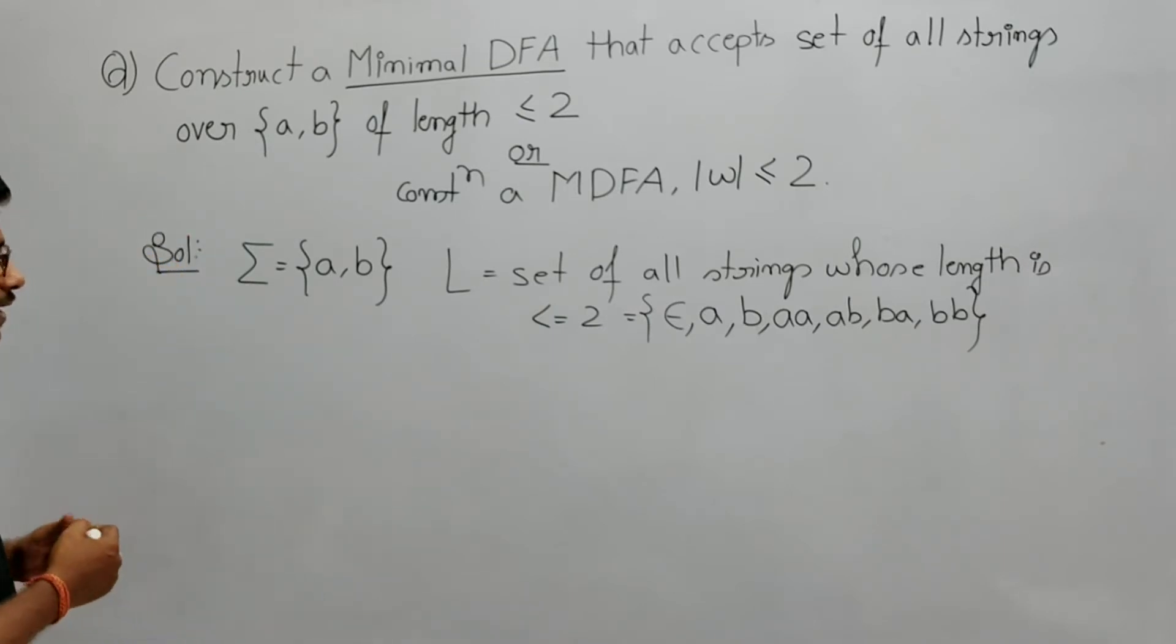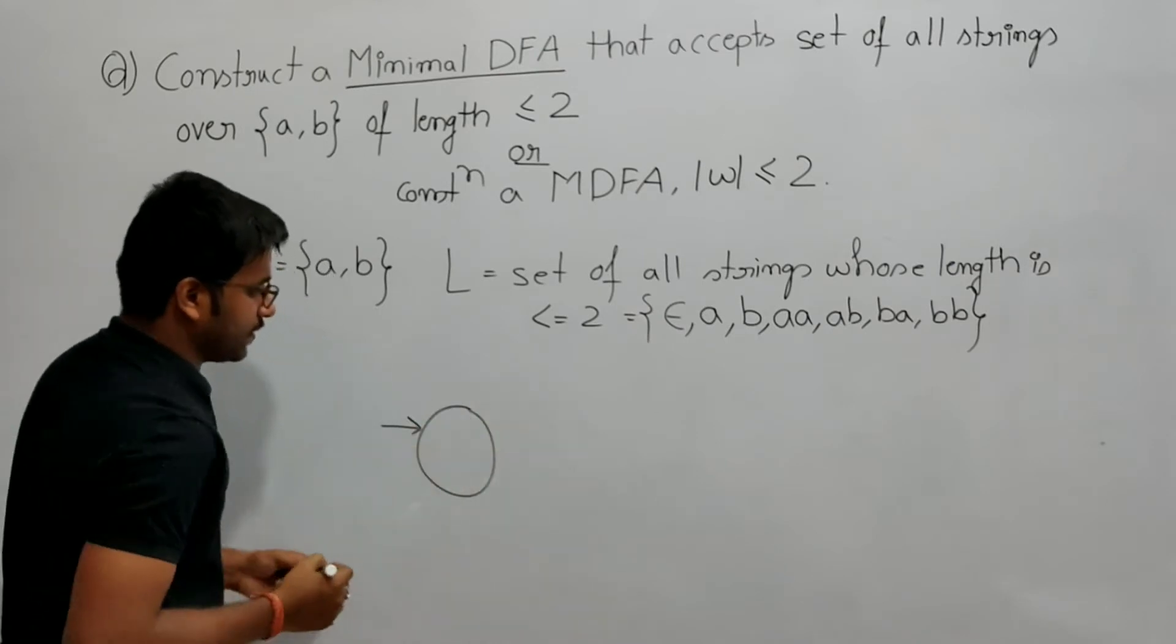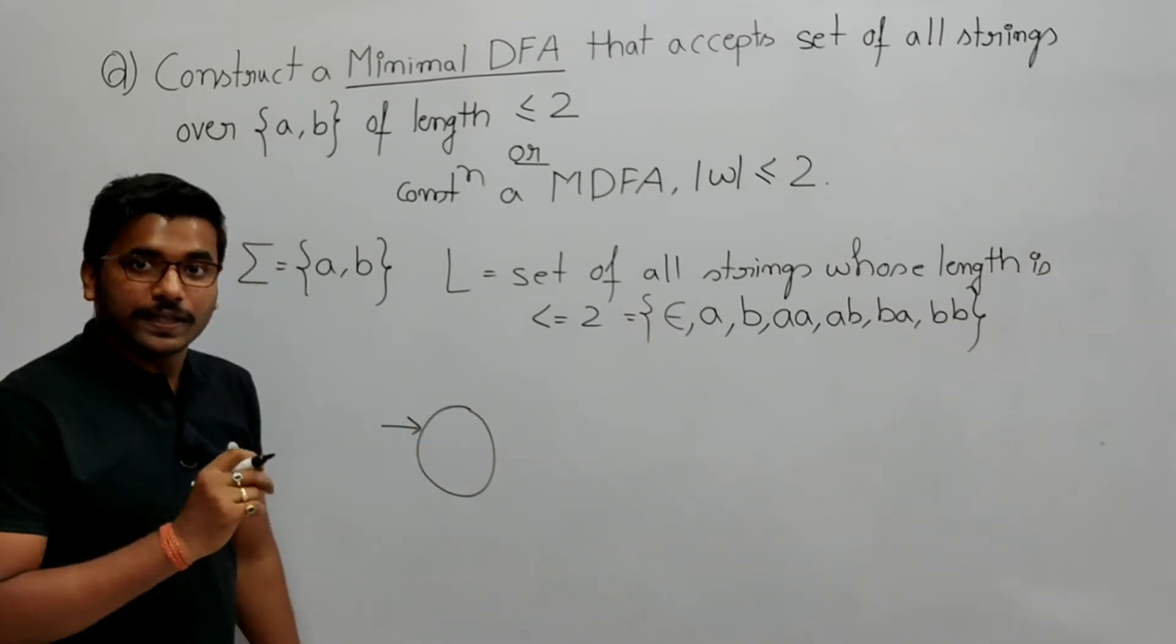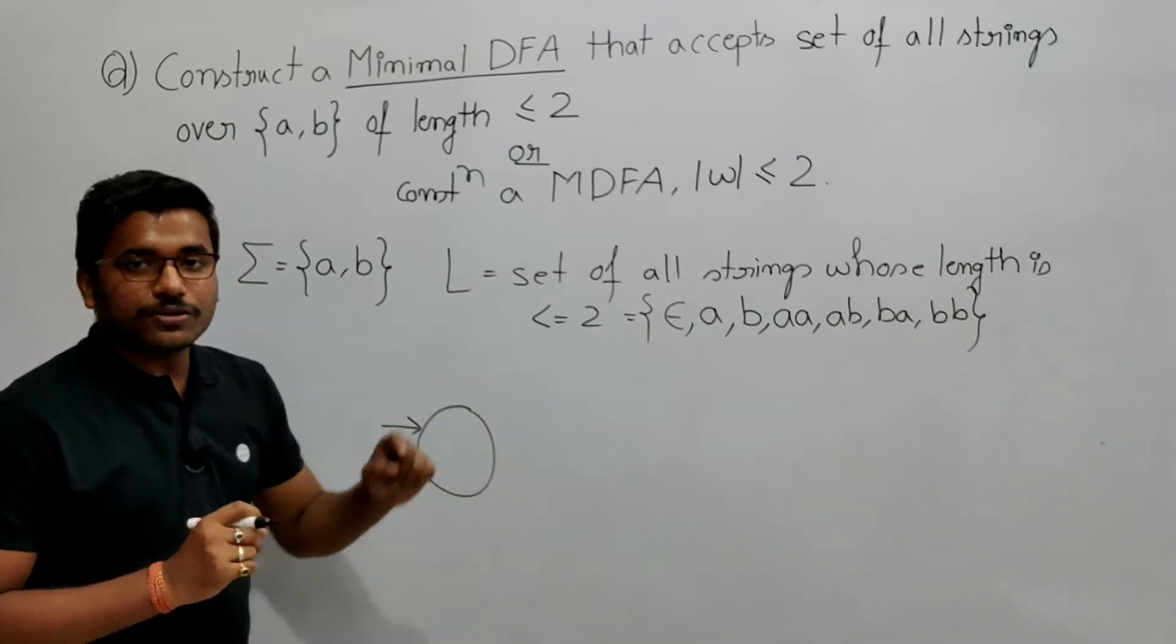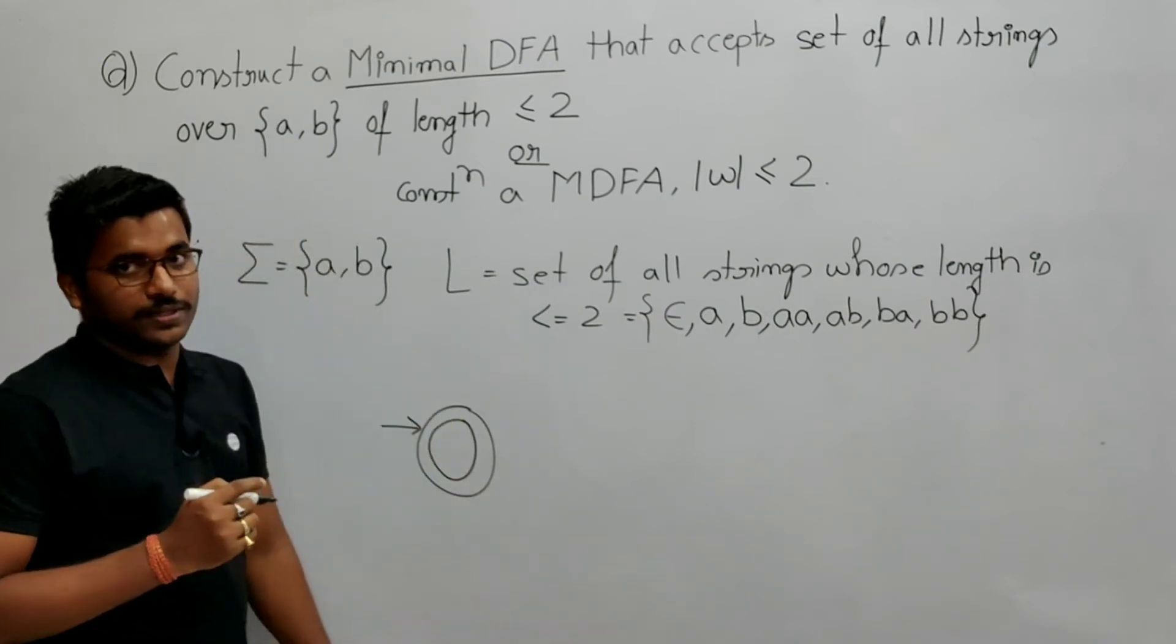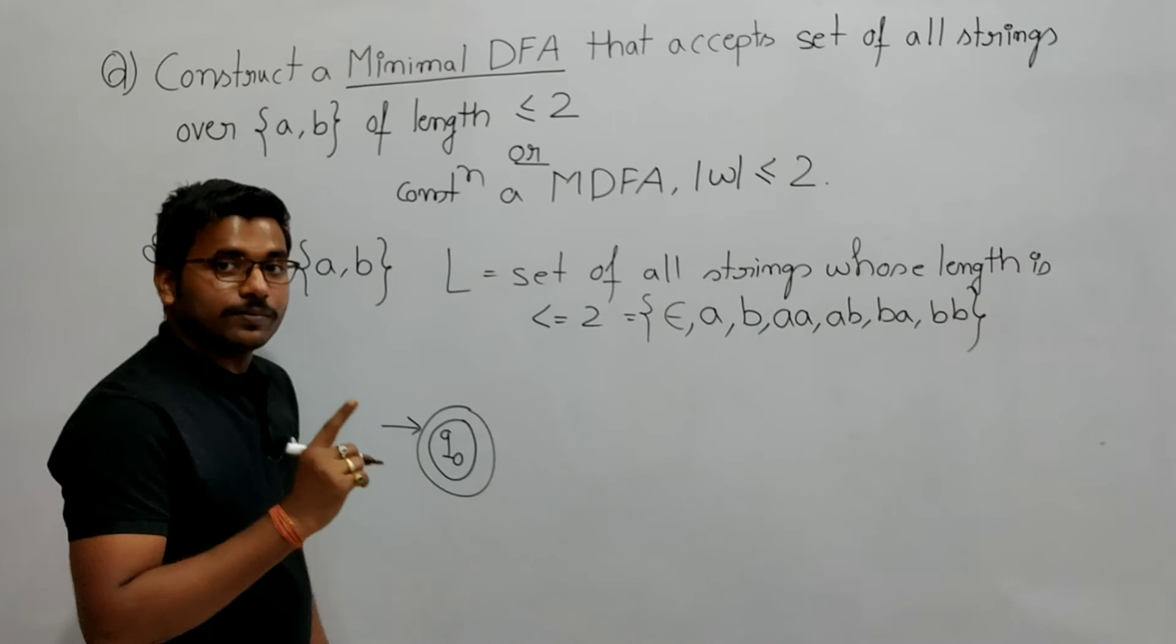So how to construct a minimal DFA for this? Now see, the initial state, this initial state is indicating that the length of this string is 0, that's epsilon. So epsilon belongs to this language, so to accept epsilon I need to make this state as final. So it is q0 indicating that the length of this string is 0.